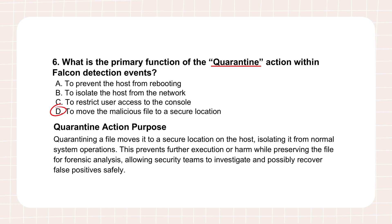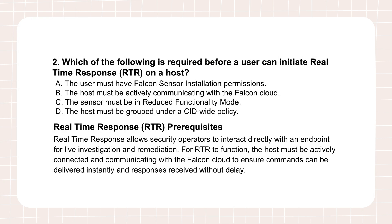Once you've maybe contained or quarantined, how do you actively interact with the host? Question two asks about real-time response, or RTR — specifically what's needed first. The source says prerequisite B is key: the host must be actively communicating with the Falcon cloud. The sensor needs that live heartbeat back to base. The explanation says this is so commands can be delivered to the sensor and, crucially, responses can come back from it.